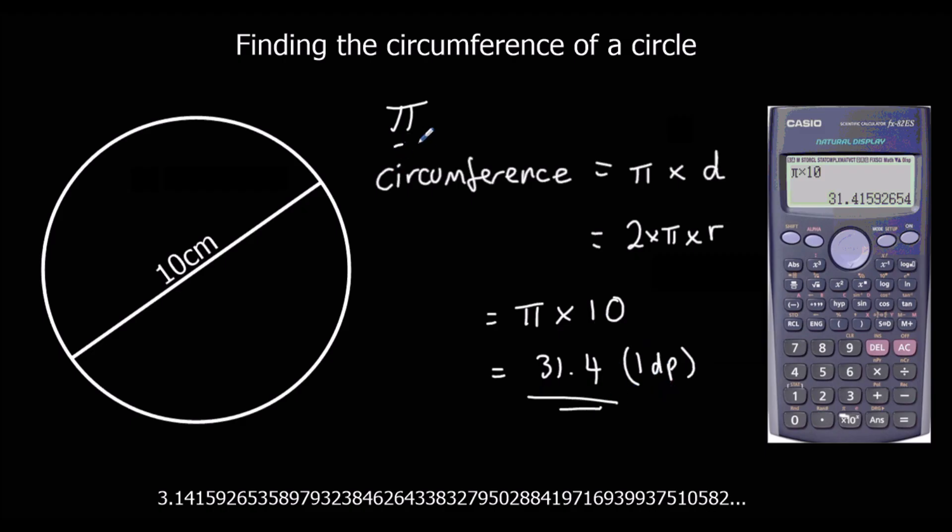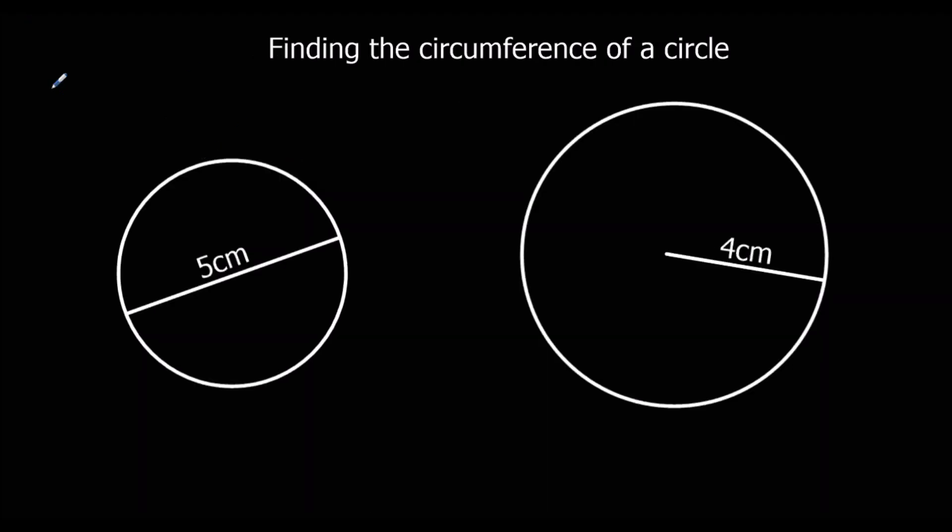So the circumference of a circle is found by using this formula, or one of these two formulas. So let's have a look at some questions. So remember the formula, circumference is pi times diameter, or 2 times pi times the radius. It doesn't matter which one we use. So let's look at this first one here. We've been given the diameter, so we may as well use pi times diameter.